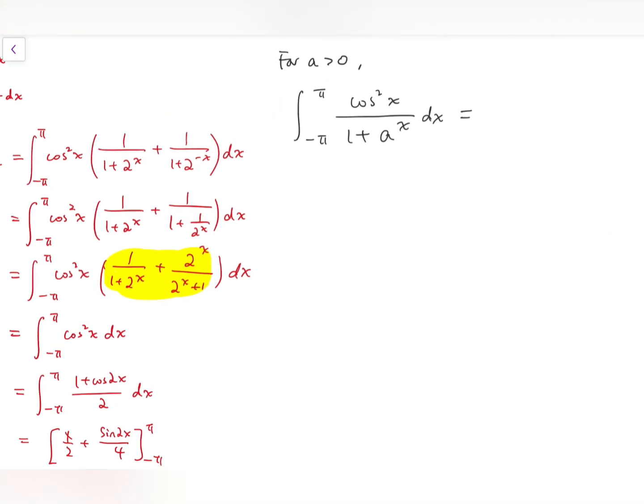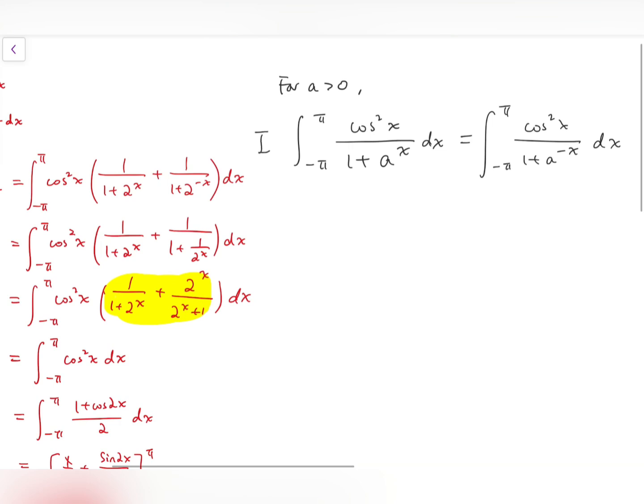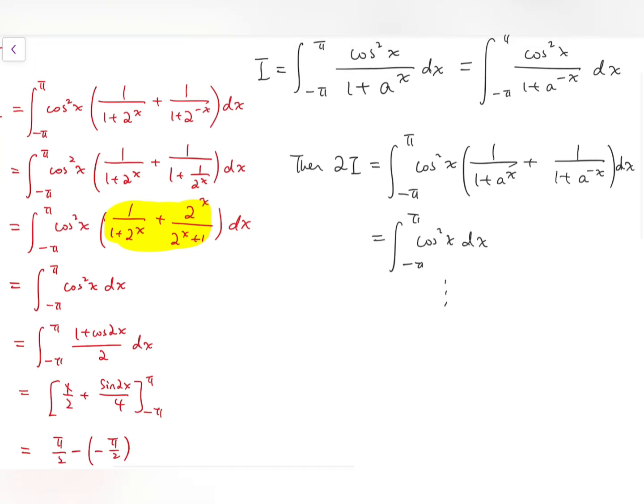So I can say that it's equal to this integral. And so therefore, if I let I equals this, then 2I again equals the integral from minus pi to pi of cos squared x times the sum of the two fractions. And we will have the exact same result. Using the same argument, we will have this kind of integral, all to be equal to pi over 2, regardless of the value of a, as long as it's positive.